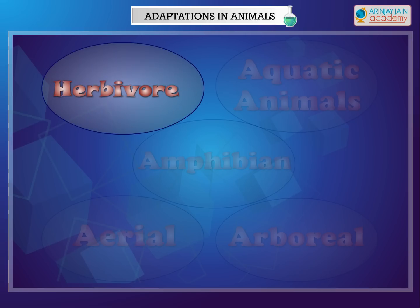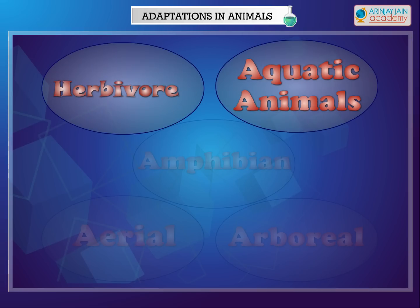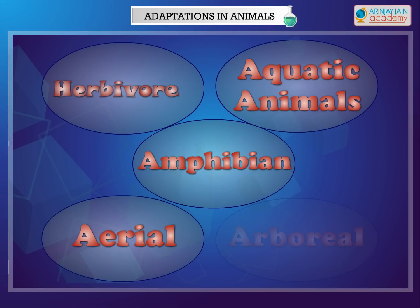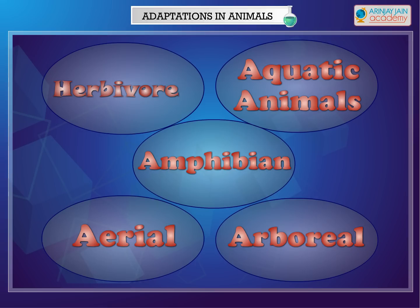The five major groups are: Terrestrial Animals, Aquatic Animals, Amphibian, Aerial, and Arboreal.